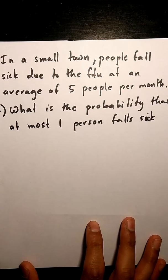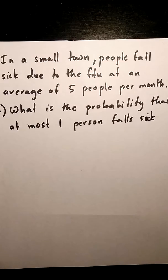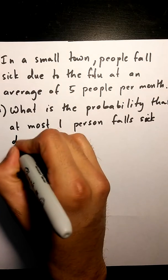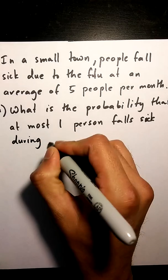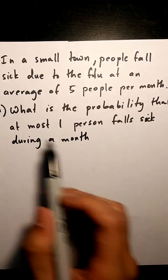Okay, so in this Poisson example, it says in a small town people fall sick at an average of five people per month. What's the probability that at most one person falls sick during a month? We're solving for this probability.